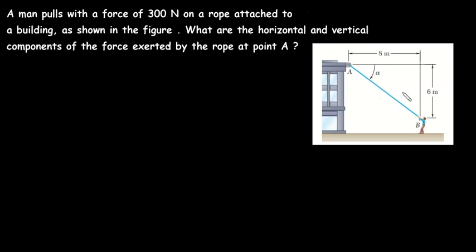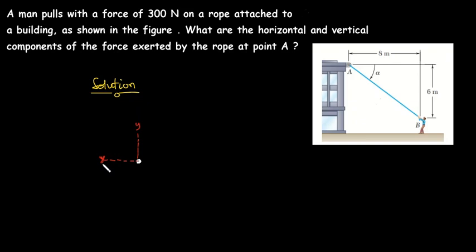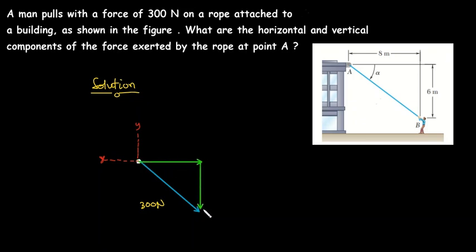So let's look at how we are going to do this. Let me first draw the free body diagram for this system. This is the X axis and this is the Y axis. Let me draw the force vector for the tension force — this represents the 300 newtons force. Now let's draw the components of this force: the X component and the Y component.